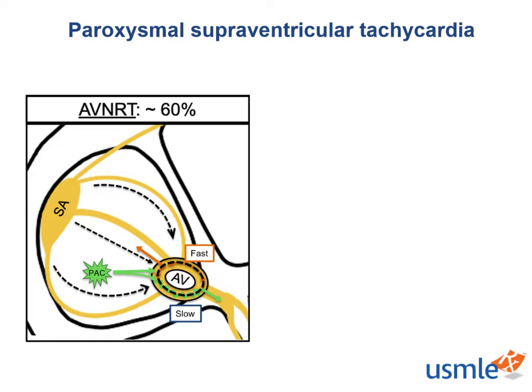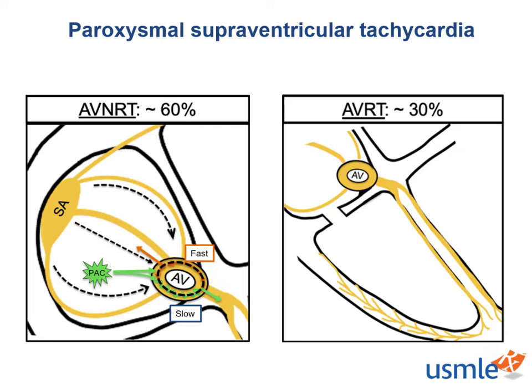The second most common cause of PSVT is AV reentry tachycardia, which requires the existence of an accessory pathway in addition to the AV node that can conduct impulses in both the anterograde direction (atria to ventricles) and the retrograde direction (ventricles to atria). Because of this requirement, AVRT is commonly associated with Wolff-Parkinson-White syndrome, in which a patient has an accessory pathway between the atria and ventricles called the bundle of Kent.